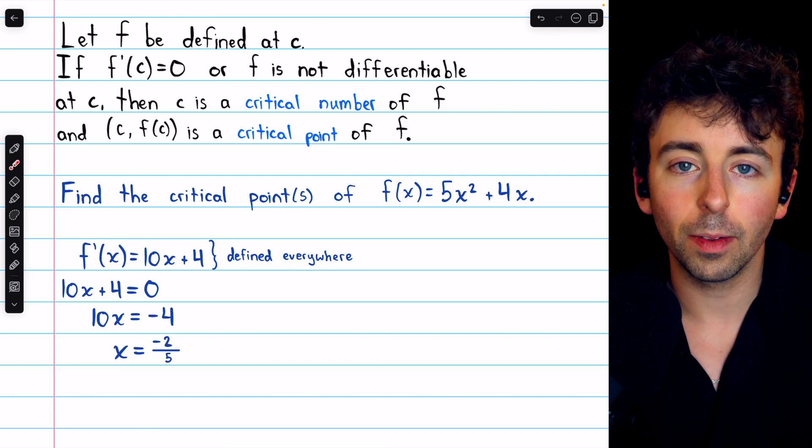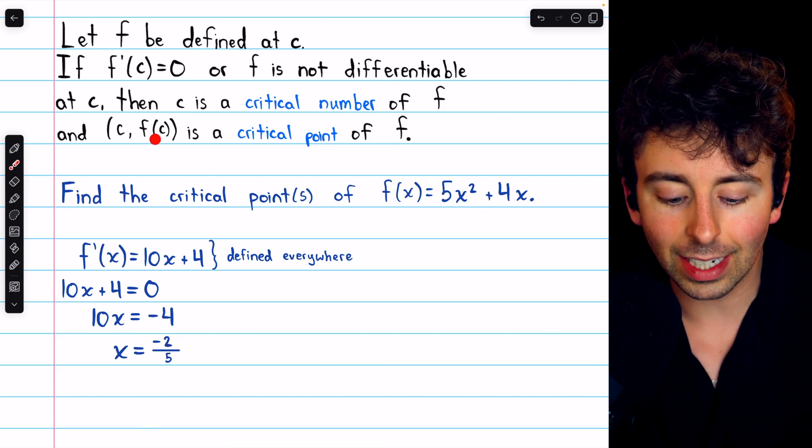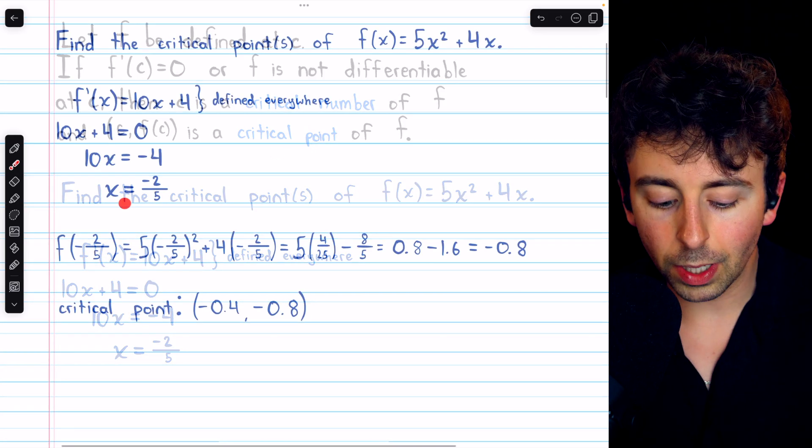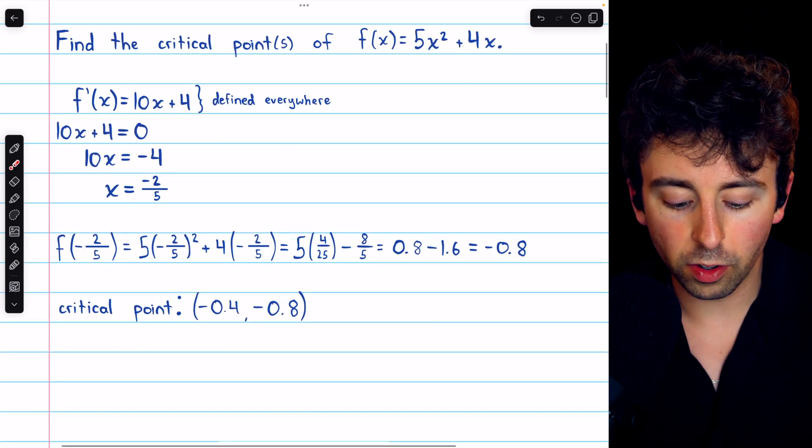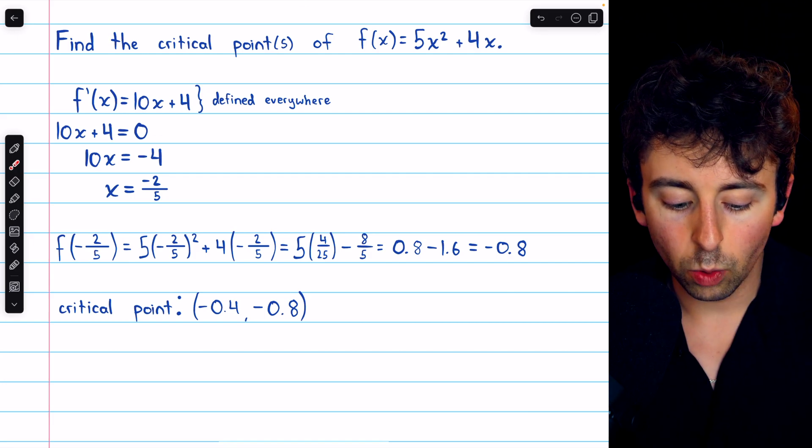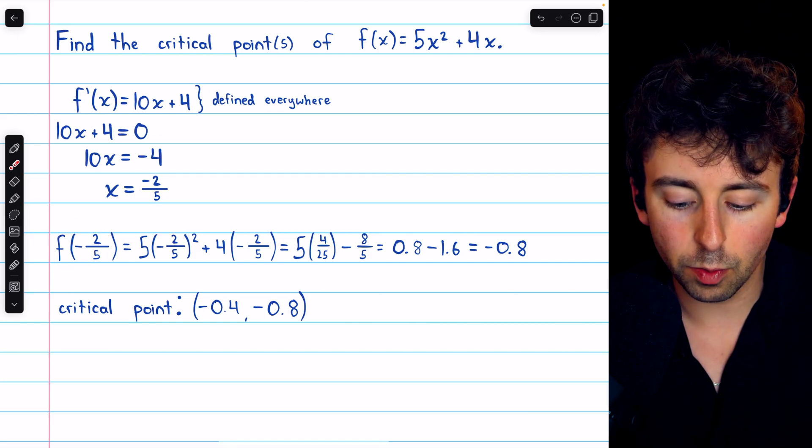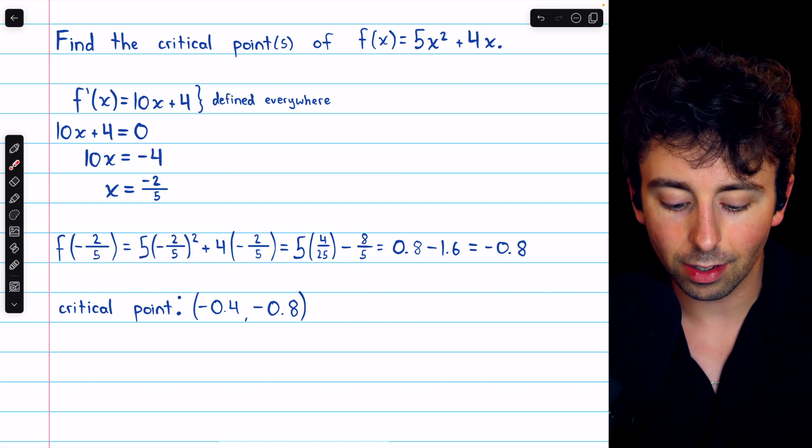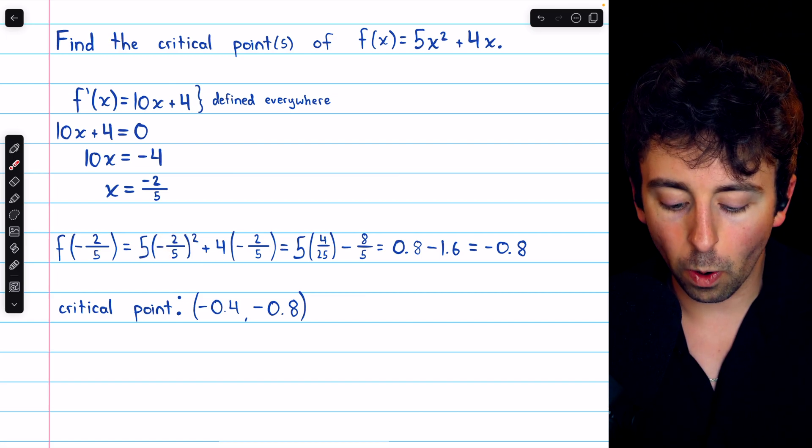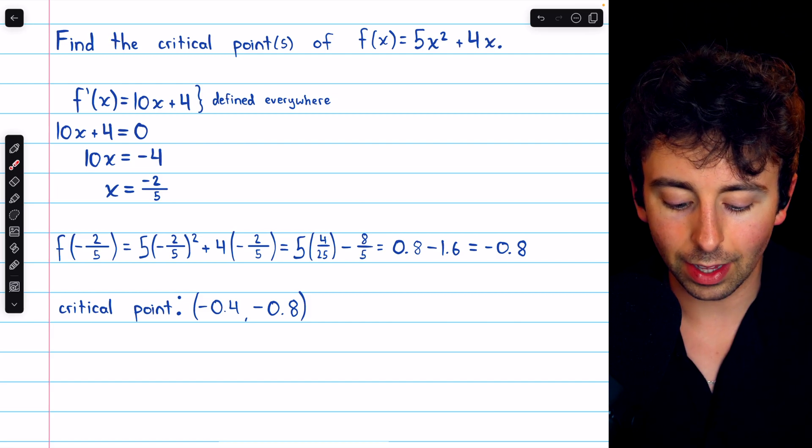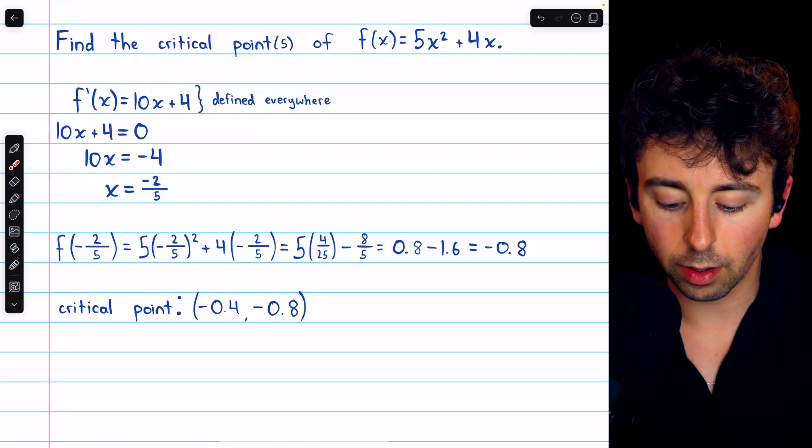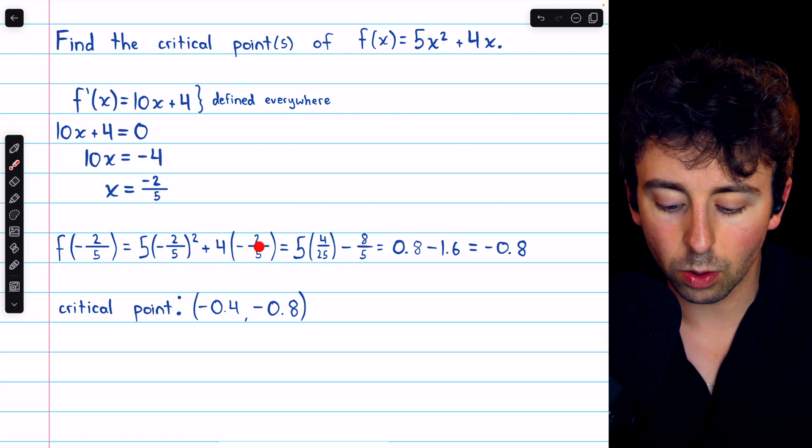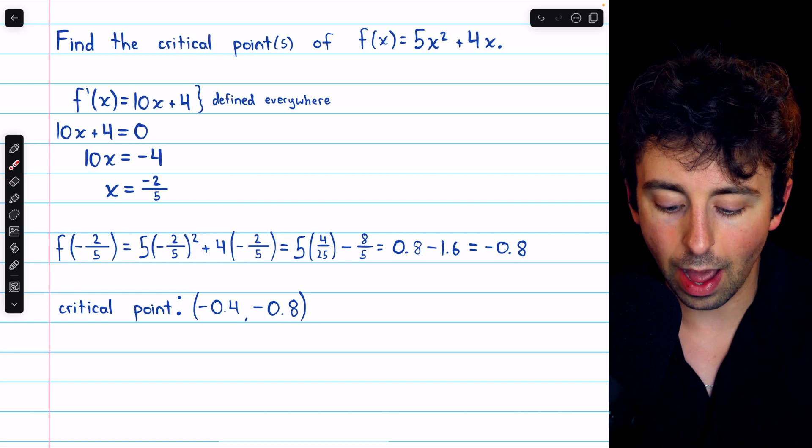That's the x coordinate, and we can plug it back into the original function to get the y coordinate and list that one critical point. So plugging this x coordinate into our function to find the y coordinate of the critical point, we have f(-2/5), which by definition is 5 times (-2/5)², plus 4 times (-2/5).